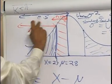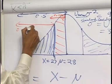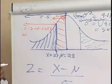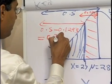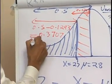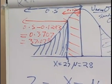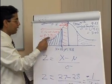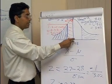Since we know the right half is 0.5 and the red area is 0.1293, the area we are looking for is 0.5 minus 0.1293, which equals 0.3707, or 37.07%. This tells us that the probability of the project being completed in 27 days is 37.07%. Remember, the probability for 28 days is 50%.